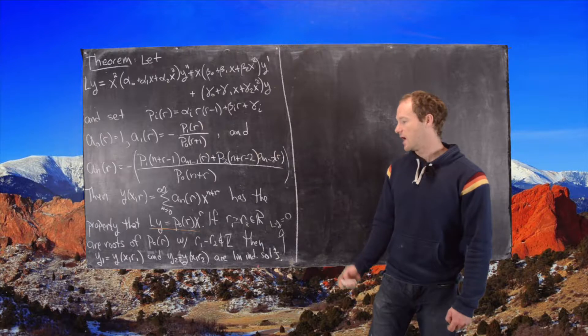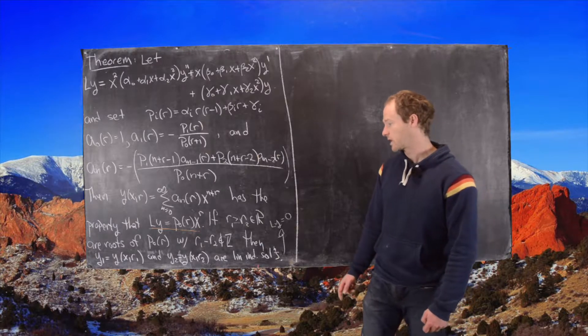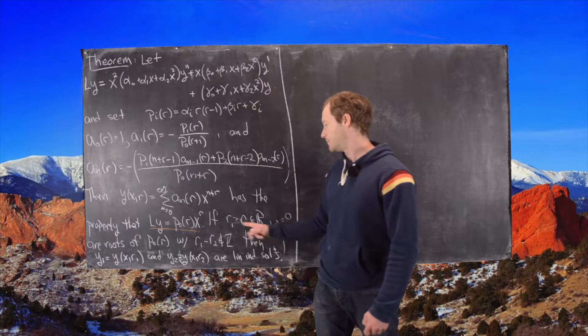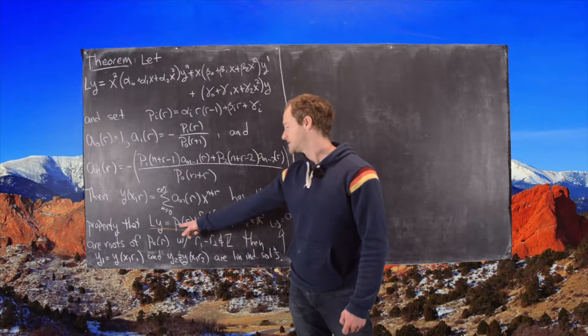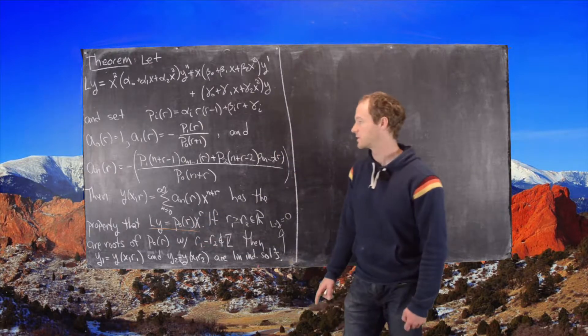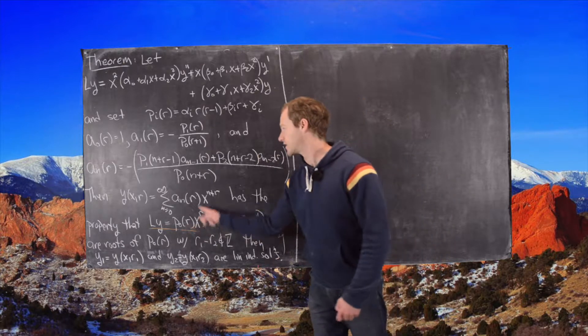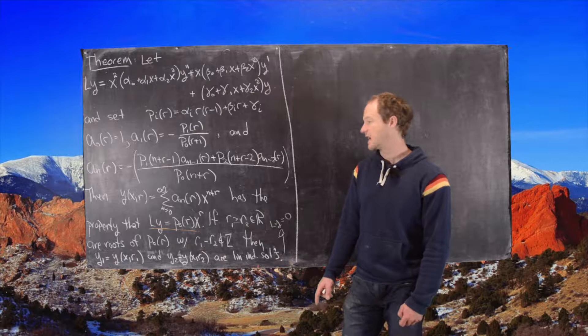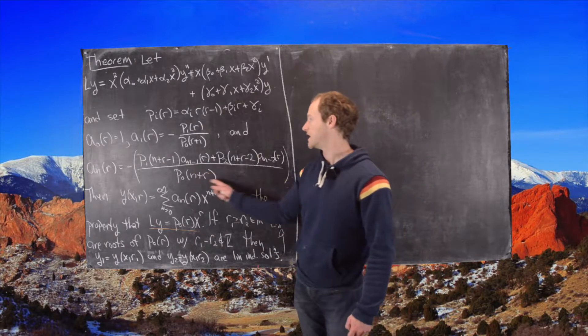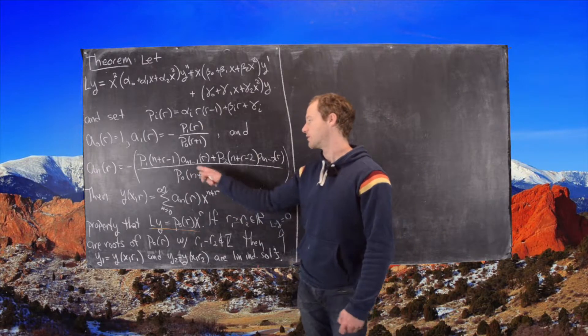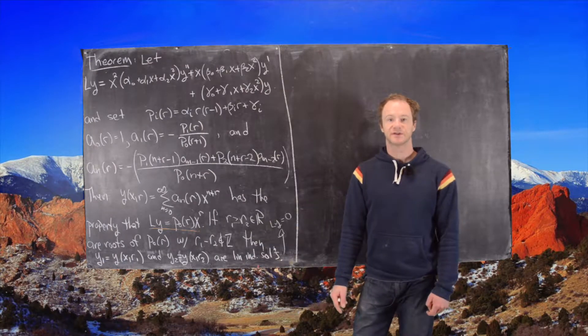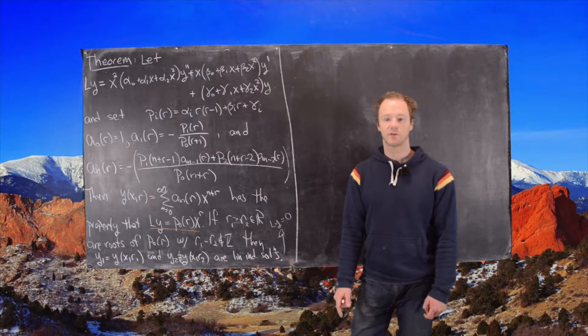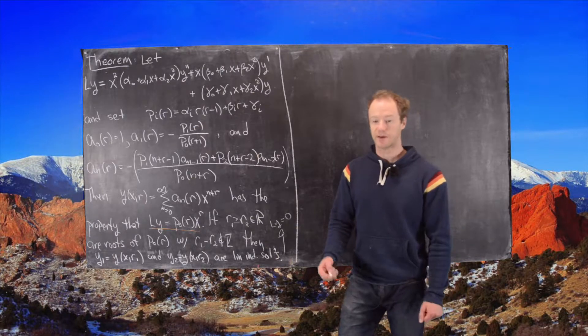So that's pretty clear that that should work. So notice if we have one solution and we plug it in here, then this is going to disappear. And then if we have another solution, it will also disappear. And then why do we need this notion that the difference is not in Z? Well, we need that because otherwise we would potentially get a 0 in the denominator in this recursion. So that clears up why the end of this theorem works. So now let's look at an example.